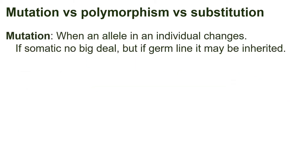First, mutation. Mutation is when an allele in an individual changes. This is a single, one-time event. If the mutation is somatic, no big deal — essentially the worst that can happen is cancer for that individual. But if it occurs in the germline, it may be inherited, which can lead to bigger consequences. A mutation is also a noun used to describe an allele that is different from the wild type, but in this video I'm focusing on how the word mutation is misused to describe evolutionary change at the population level.